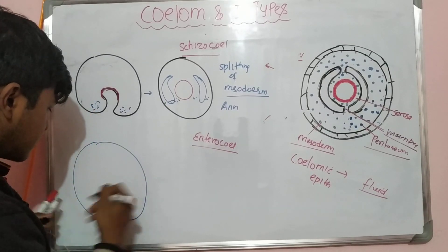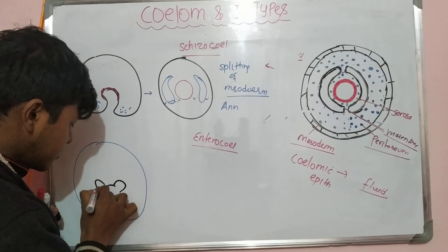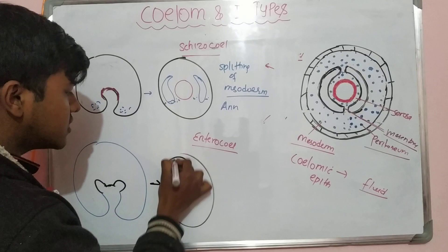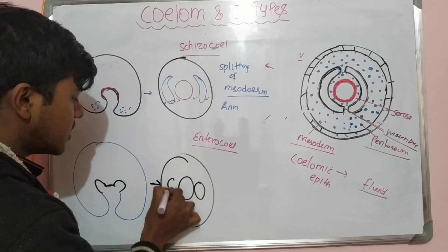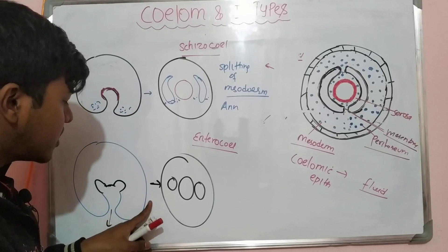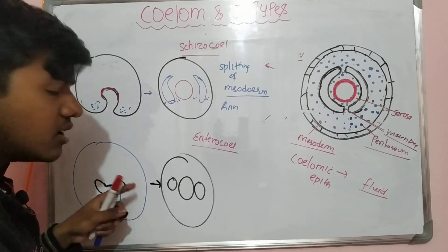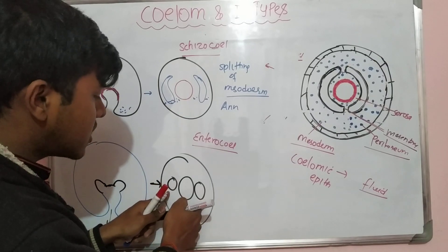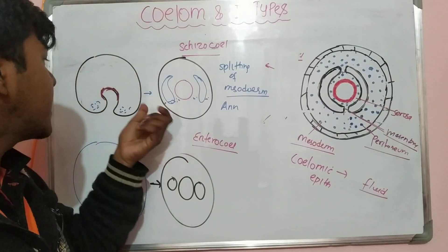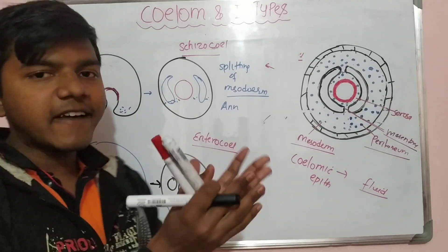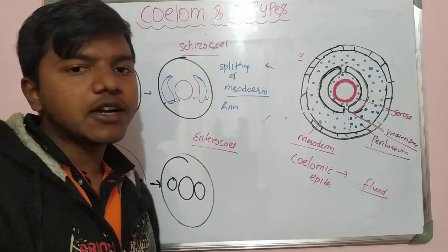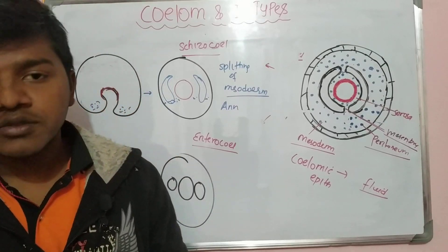In enterocoely, the coelom is formed by the invagination of the archenteron. This is different from schizocoely — instead of splitting of mesoderm, pouches from the archenteron invaginate outward to form the coelom. The outer ectoderm, blastocoel, endoderm, and mesoderm are visible. The difference is that in schizocoely it is formed by splitting of mesoderm, while in enterocoely it is formed by invagination of the archenteron. Enterocoely is present in echinodermata and the higher chordates.